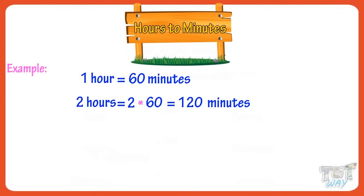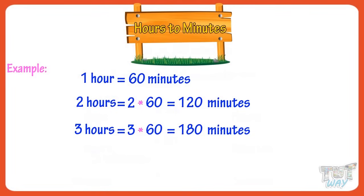Now let's convert three hours into minutes. One hour equals 60 minutes, so three hours equals 3 multiplied by 60, that is 180 minutes.